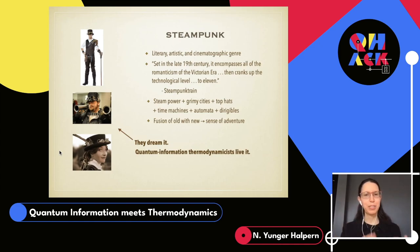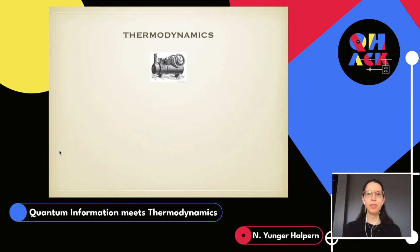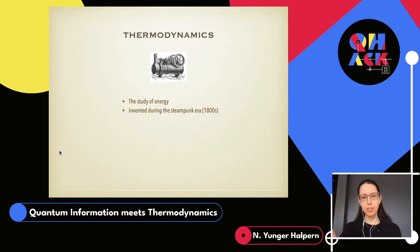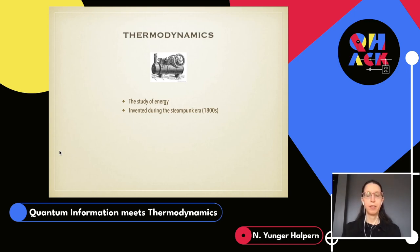Let's break down that term. Thermodynamics is a branch of physics, chemistry, and engineering — the study of energy, the forms that energy can be in, and the transformations amongst those forms. Thermodynamics was developed during the 1800s, the steampunk era. It was inspired by the Industrial Revolution. For the first time, steam engines were powering factories, transforming civilization.